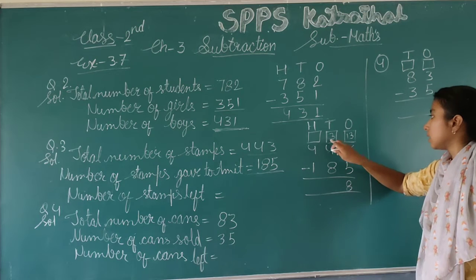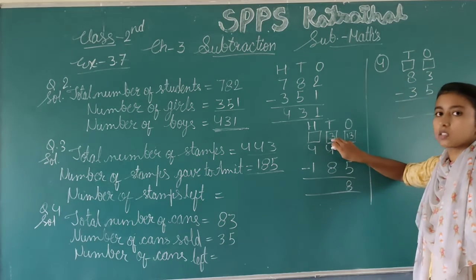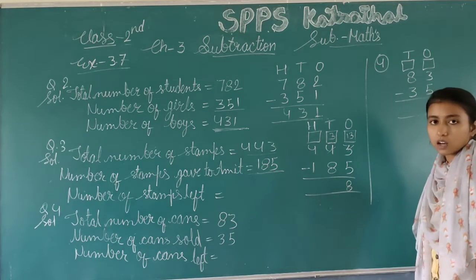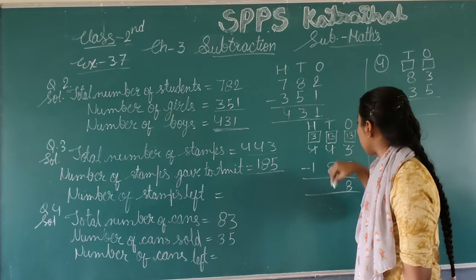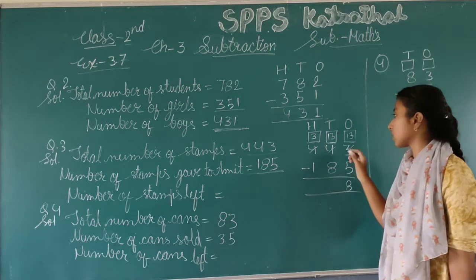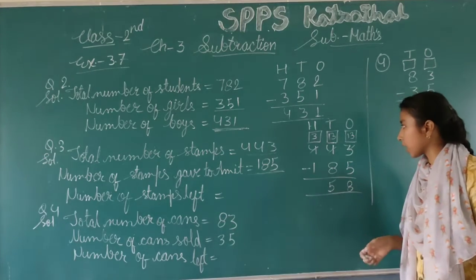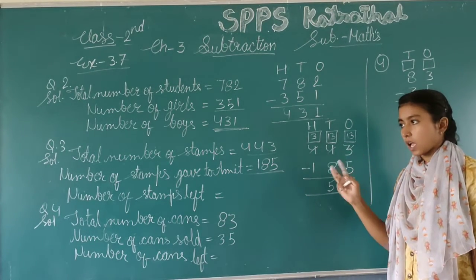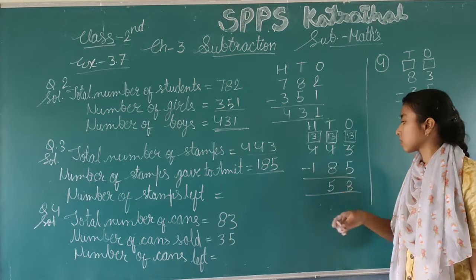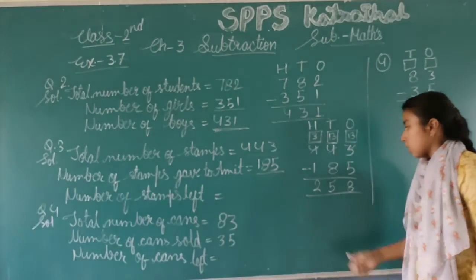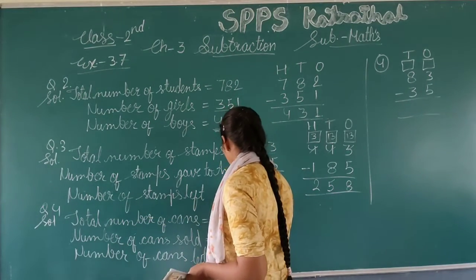Now, next: we have 8 minus — will it happen? No, because 3 is smaller than 8. We carry 1 from the next digit, so it becomes 13. In 13, 8 can be subtracted: 13 minus 8 is 5. We count up from 8: 9, 10, 11, 12, 13 — that's 5. So we write 5. Then 3 minus 1 gives us 2. The answer is 258. The number of stamps left with Alka is 258.